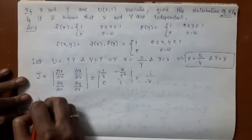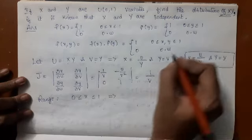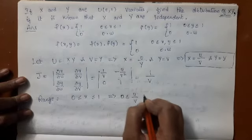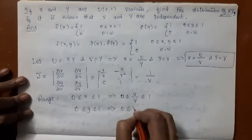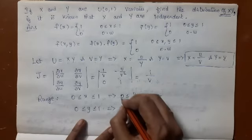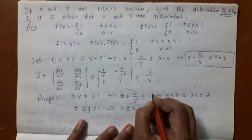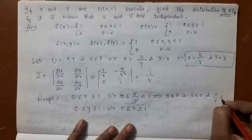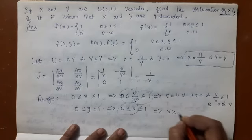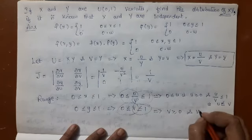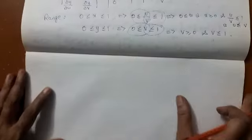The Jacobian J = 1/v. Now, talking about the range: x lies between 0 and 1 means u/v lies between 0 and 1, giving u ≥ 0 and u ≤ v. And y lies between 0 and 1 means v lies between 0 and 1, giving v ≥ 0 and v ≤ 1. We should incorporate all this information in a graph to find the region of integration.